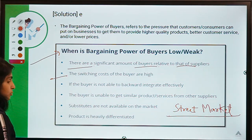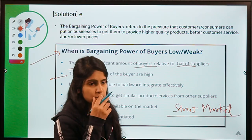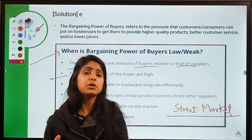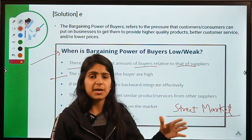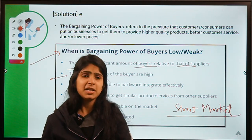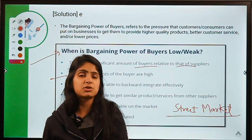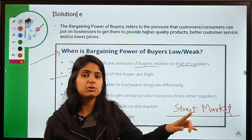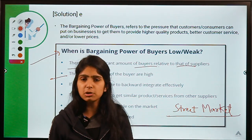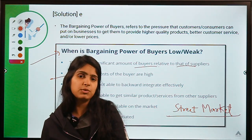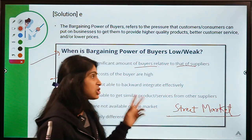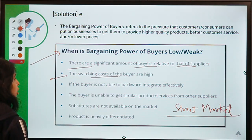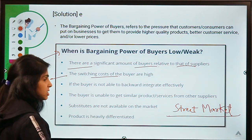Another situation where buyer power is weak is when switching costs are very high. For example, if you want to eat at a nearby restaurant versus a far away one — even if the nearby restaurant costs a little more, switching to the far away one requires spending on petrol or transportation. So ultimately you go to the nearby restaurant which charges higher prices, because switching costs are high. If you want to replace the seller, the cost is high, so you stick with the available one.